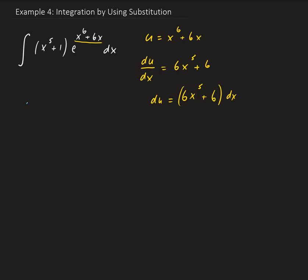So far, we have the integral of e to the u. We still need to convert the other part. We still need to convert x to the fifth plus one and dx in terms of u. If we go back to the expression for du, notice that we can factor out six here. So du is going to be equal to six times x to the fifth plus one dx.